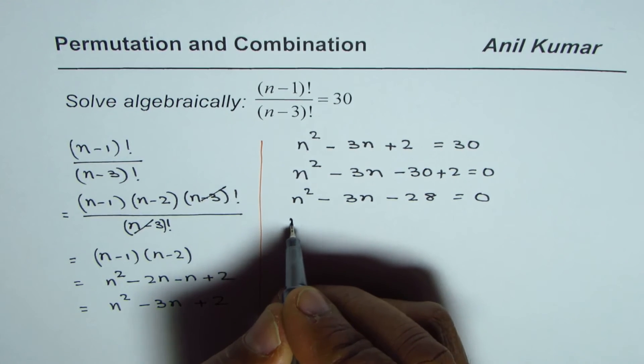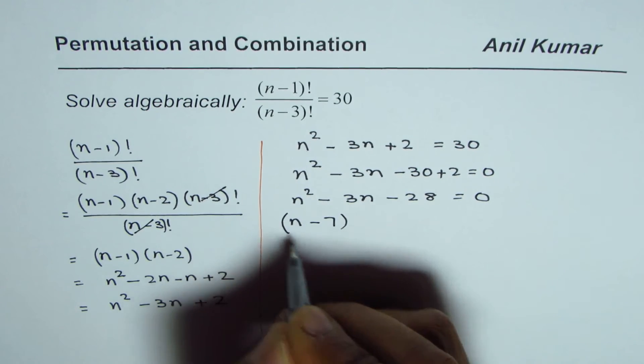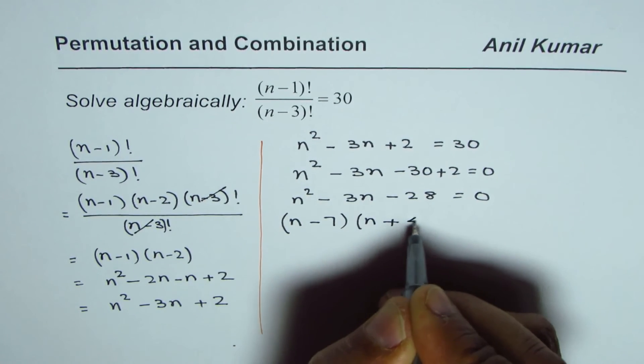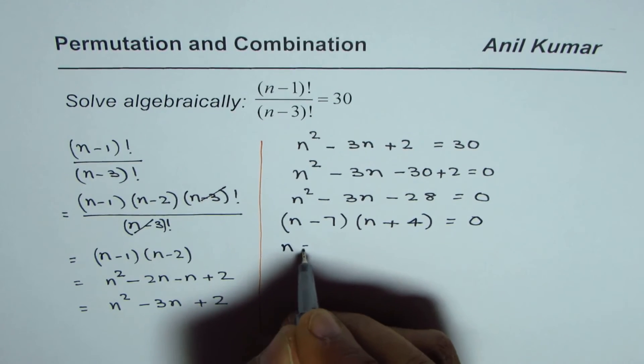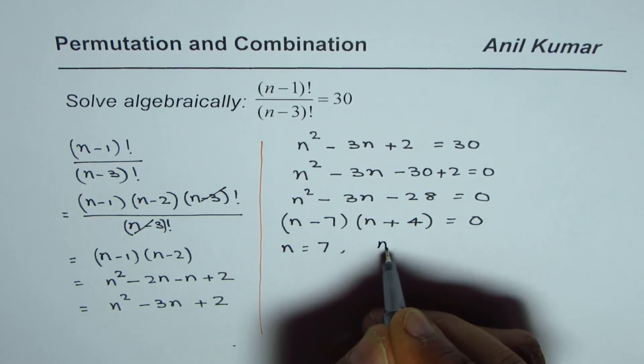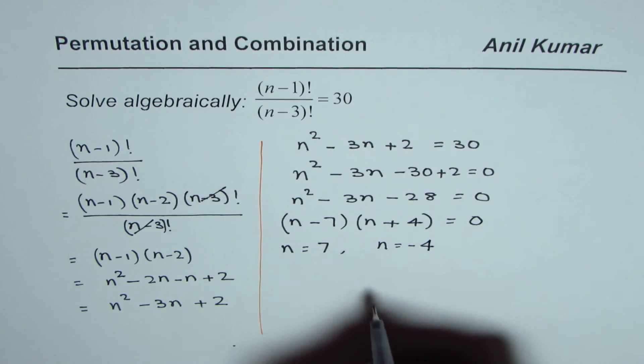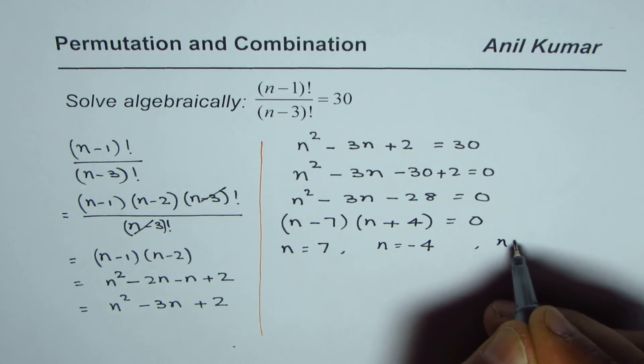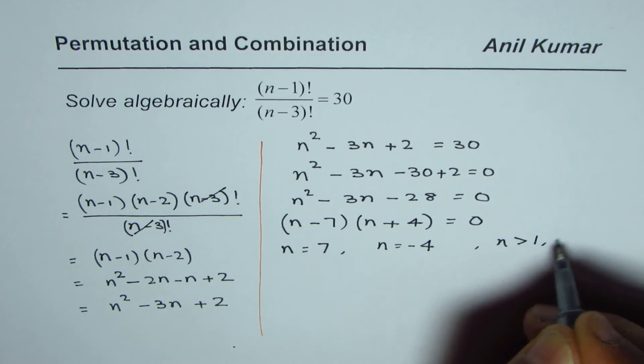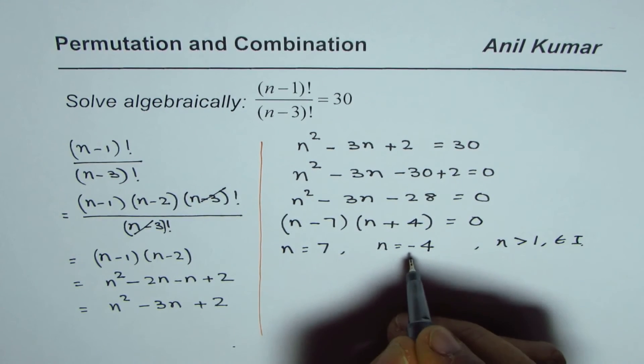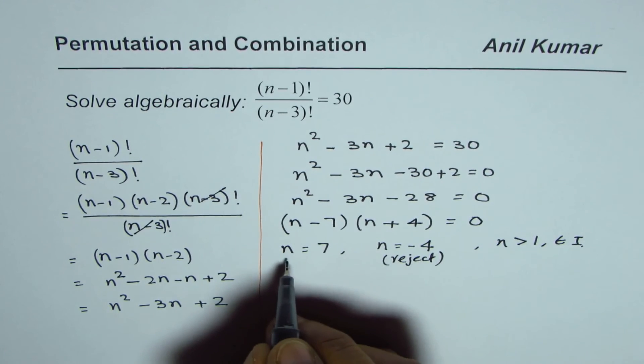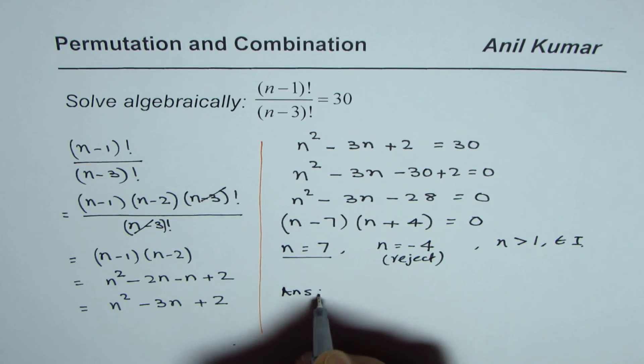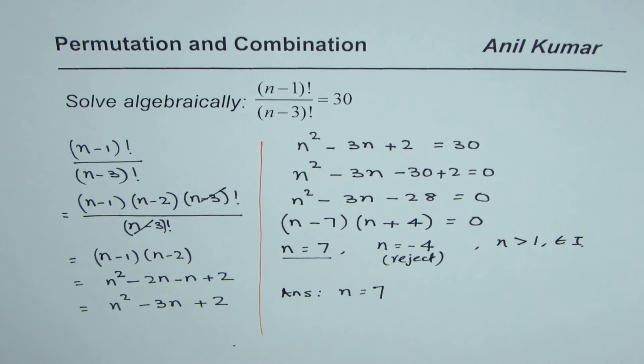We can write this as (n-7) times (n+4) equals 0. Solving, we get n equals 7 or n equals -4. Since n is greater than 1 and it belongs to integers, we have to reject that answer.